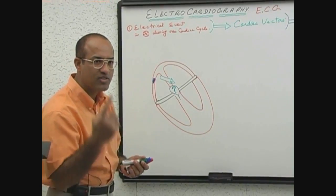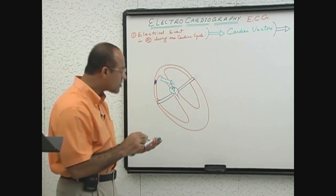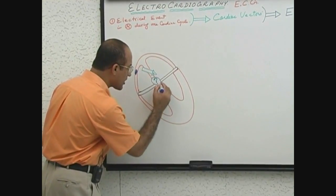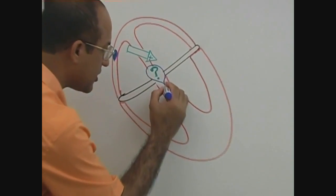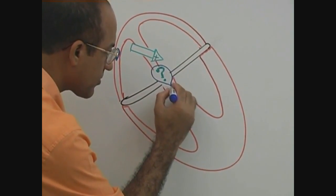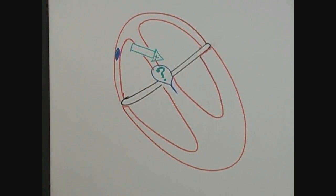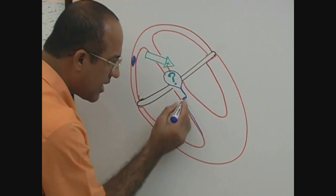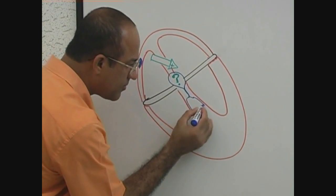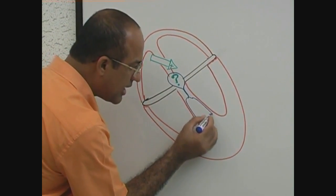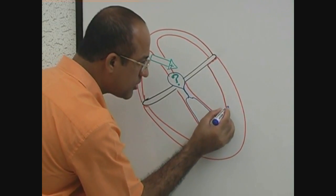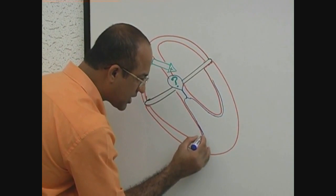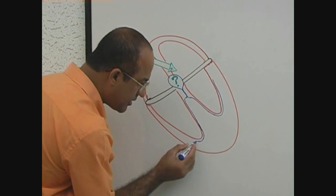The next electrical event in the cardiac cycle is that current has come to the Purkinje system. Through the bundle of His, current will come to the right bundle branch and left bundle branch. These bundle branches are made of specialized myocardial cells which are called Purkinje cells.